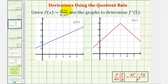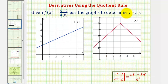Given f of x equals g of x divided by h of x, we want to use the graphs provided to determine f prime of five. We'll notice that function f is a quotient of two functions, so we'll first find the derivative function using the quotient rule. Then we'll come back and analyze the graph to determine f prime of five.